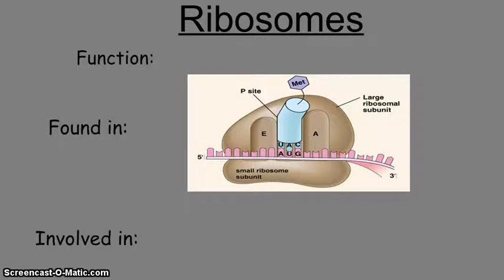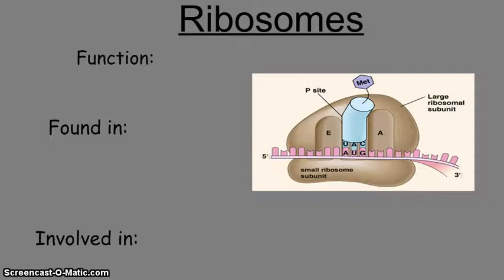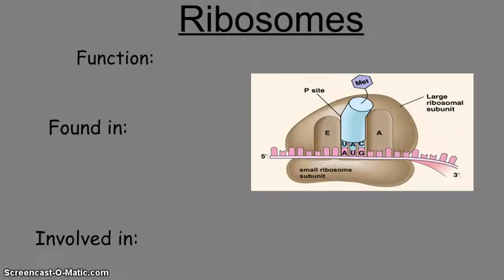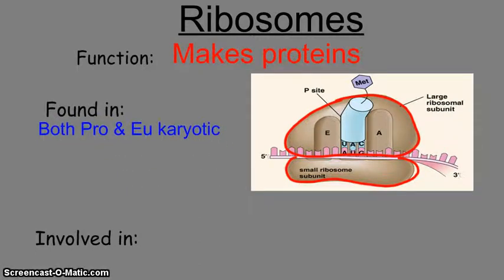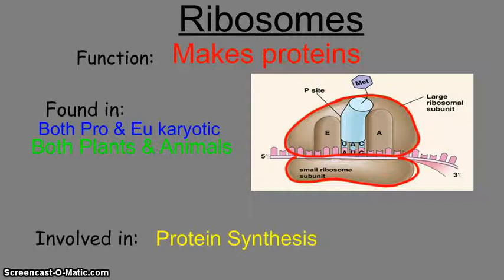The ribosome is a really small organelle. It has two main parts: the large ribosomal unit and the small one, and together that's what a ribosome is. Its main function is to make proteins — a key one to remember. Ribosomes are found in both eukaryotic and prokaryotic cells, meaning both plants and animals have them. They are involved in protein synthesis.